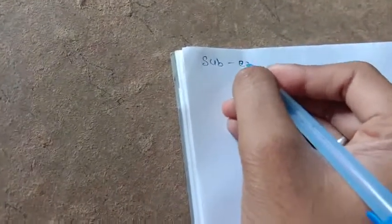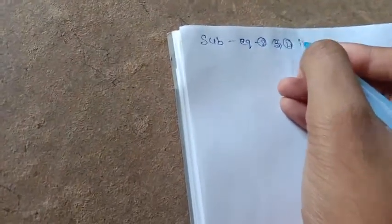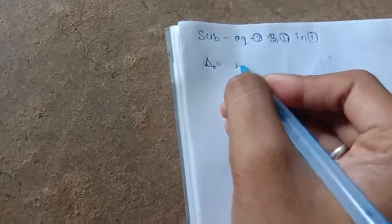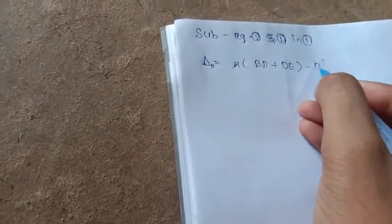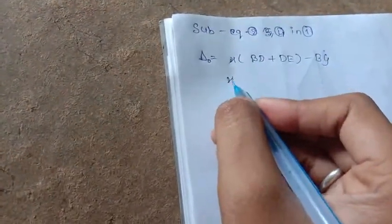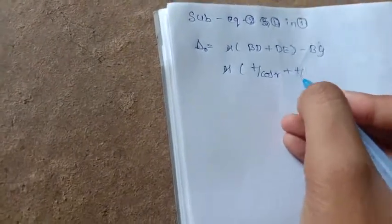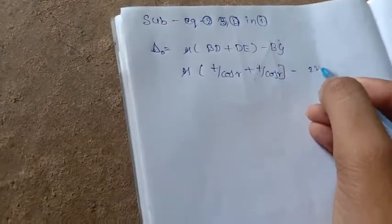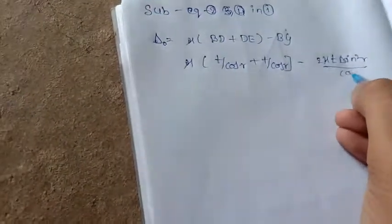Let's use equations 2, 3, and 4 in equation 1. Delta not equal to μ times (BD plus DE) minus BG. As we know, BD and DE are T by cos R plus T by cos R minus BG is nothing but 2μT sine square R by cos R.